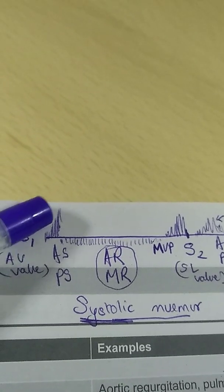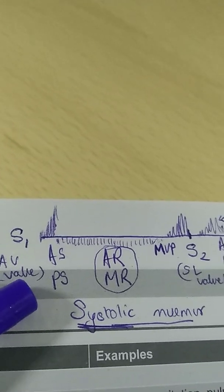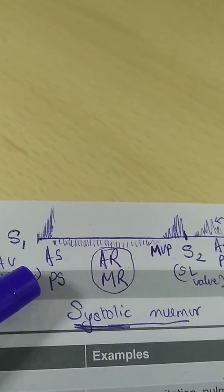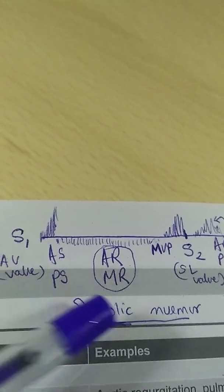If the murmur begins in the beginning itself, it is early systolic murmur. It usually happens in aortic stenosis and pulmonary stenosis, whereas the late systolic murmur takes place in mitral valve prolapse.